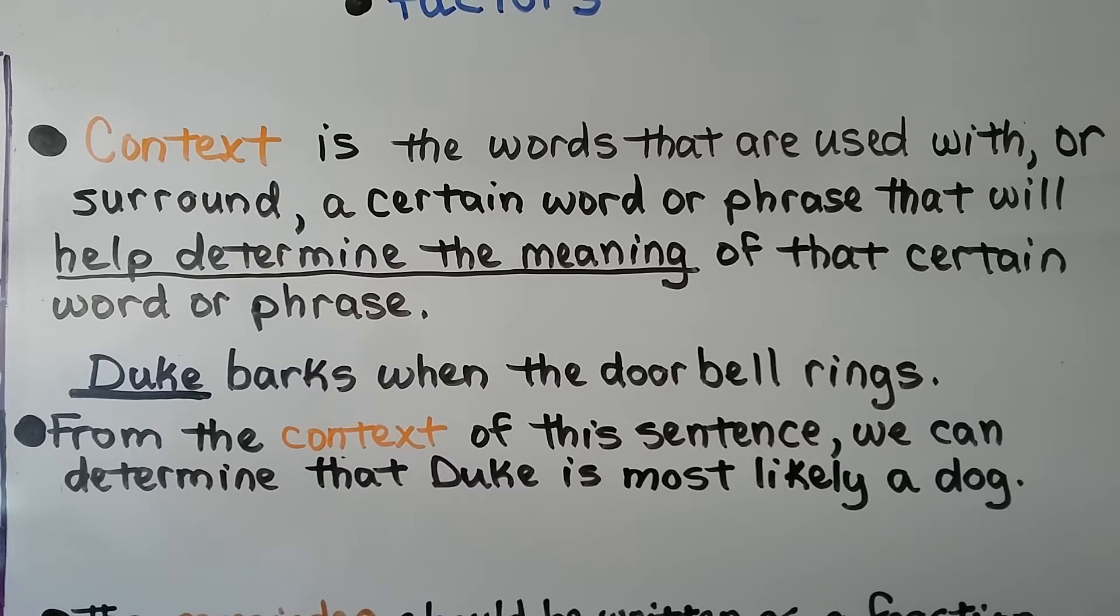Context is the words that are used with or surround a certain word or phrase, that will help determine the meaning of that certain word or phrase. If we see the sentence, Duke barks when the doorbell rings, from the context of this sentence, we can determine that Duke is most likely a dog. It's barking. It's probably inside the house because a doorbell is ringing. So it's not a wild wolf or a wild coyote, and it's not a seal. It's most likely that Duke is a dog.